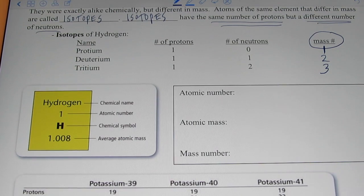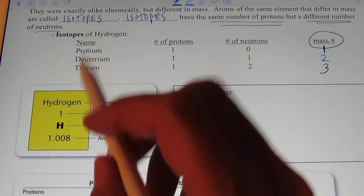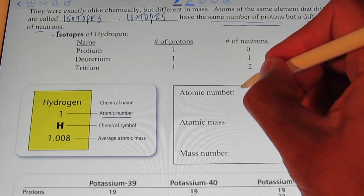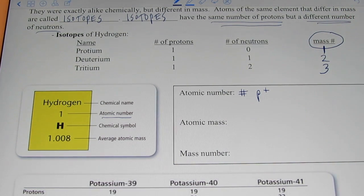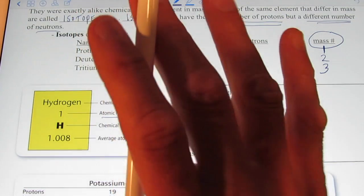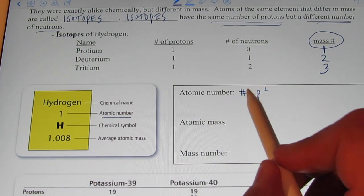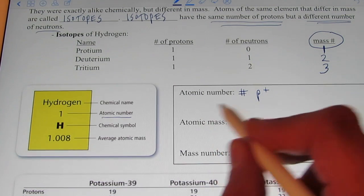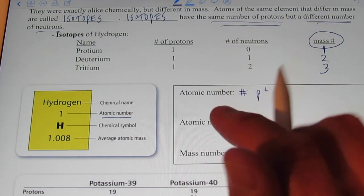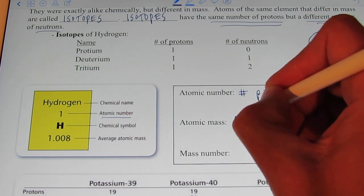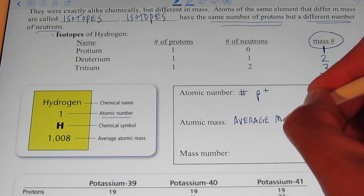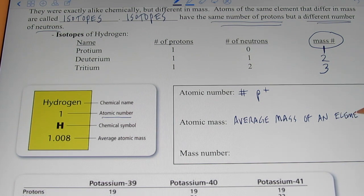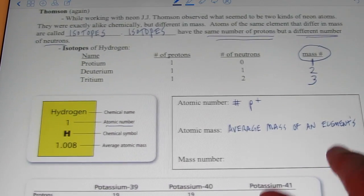When you look at the periodic table for the element hydrogen, you'll see its symbol and a whole number — an integer. That integer is called the atomic number, and the atomic number represents the number of protons. It's a whole number written usually above the symbol of the element, and it represents the number of protons in a nucleus of that atom. The atomic mass is the average mass of an element's isotopes.